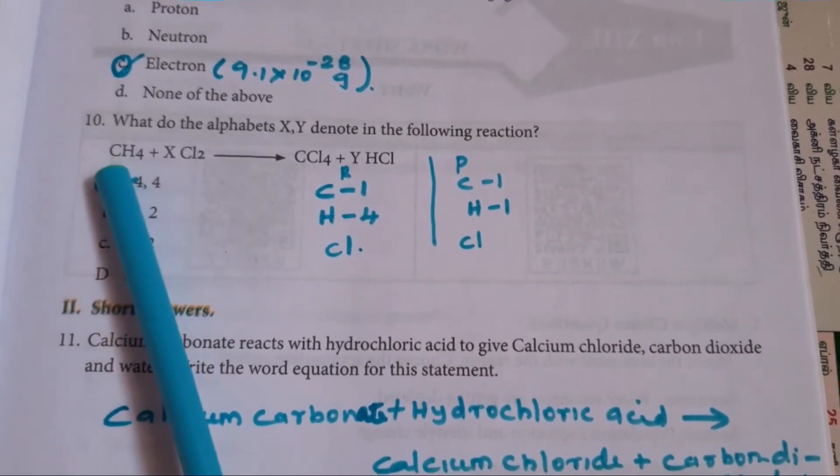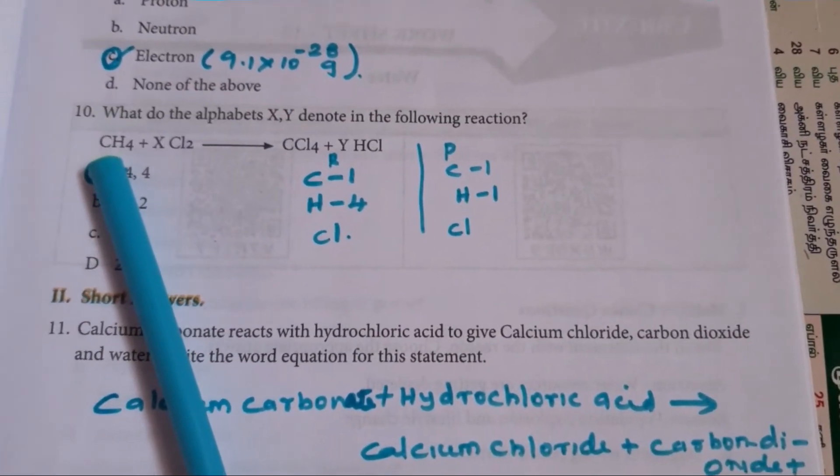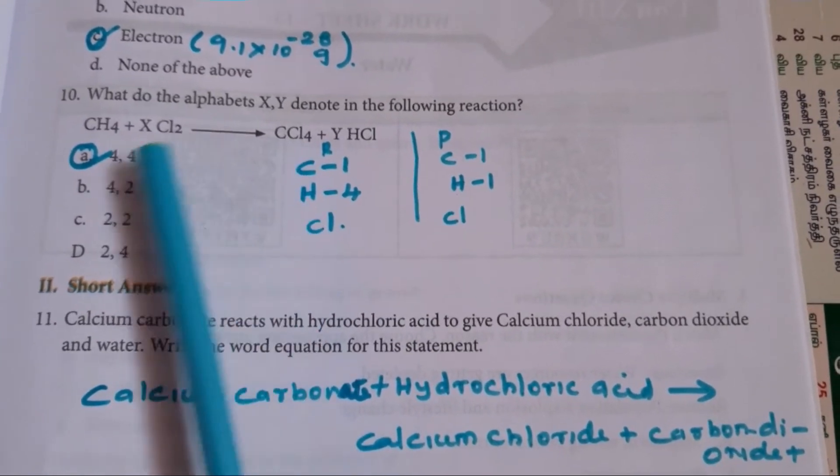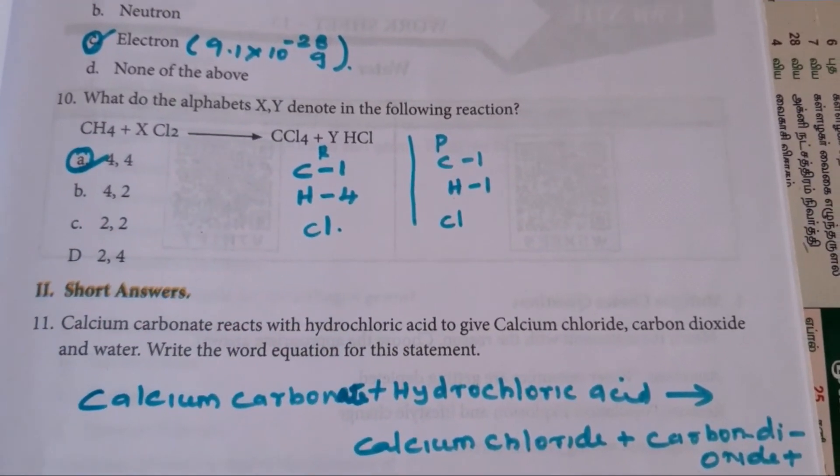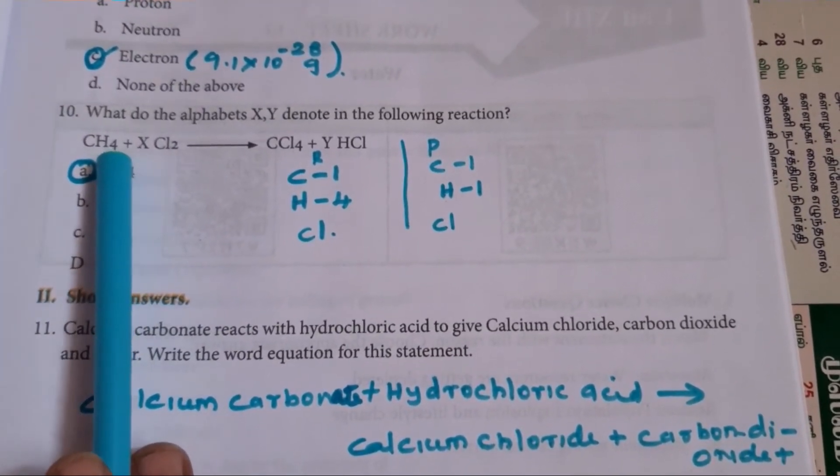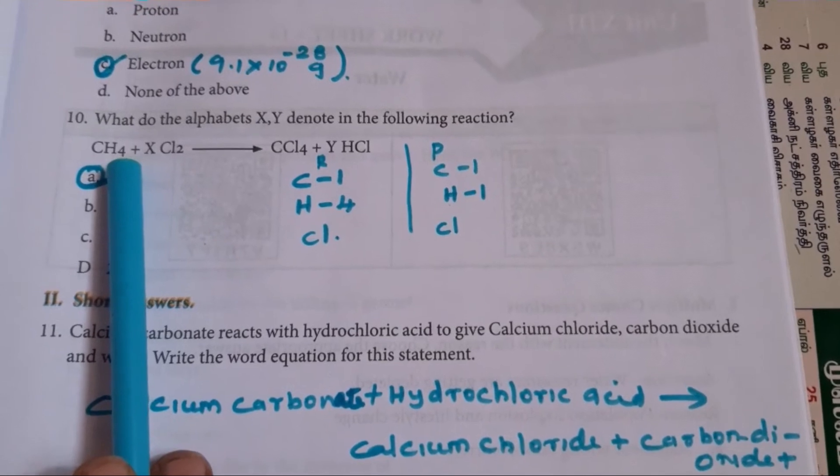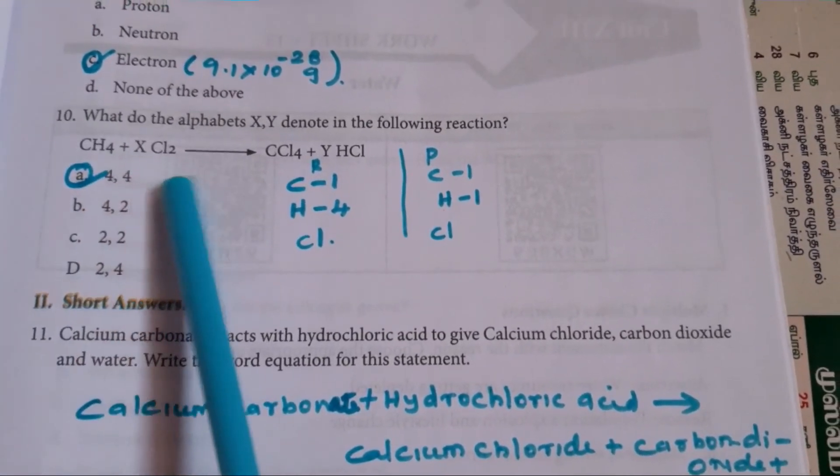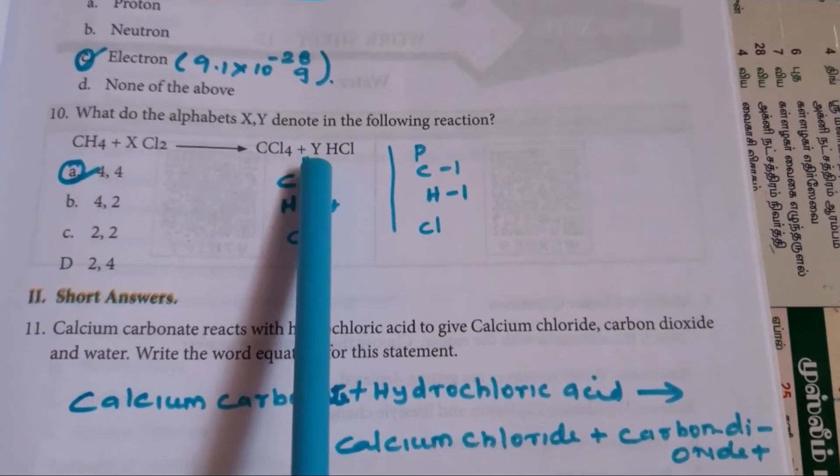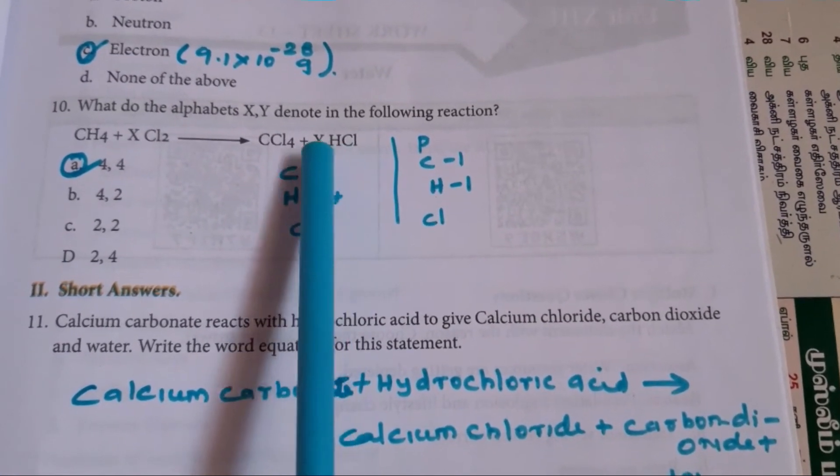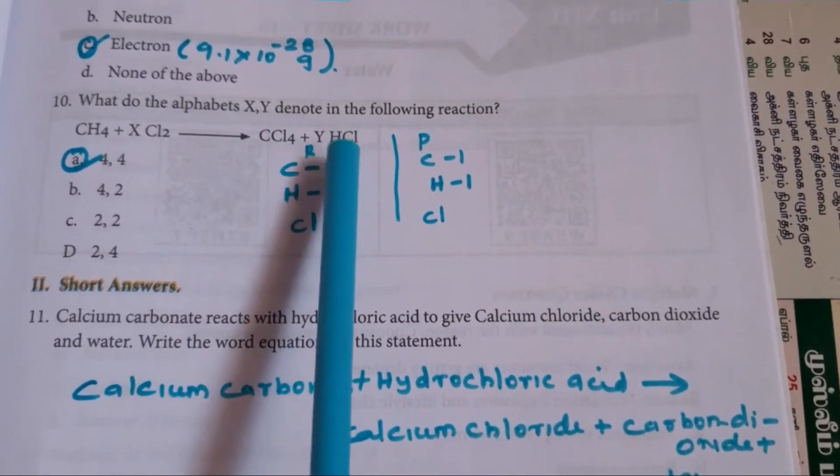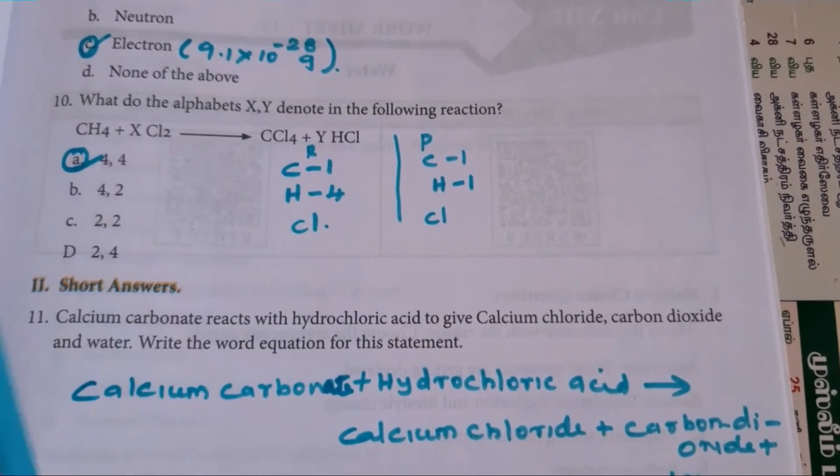So here, C is carbon. So carbon is 1 in the reactant side. And C here is also 1. So carbon is balanced. And if you are considering hydrogen, it has 4 in the reactant side. 4 hydrogens in the reactant side. But in the product side, it is just given H. So for that, we are multiplying that with H. So 4HCl. So hydrogen value will become 4. So hydrogen will be balanced.